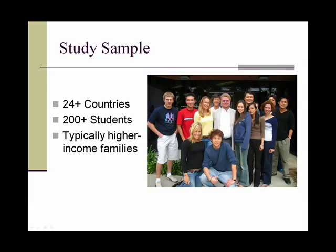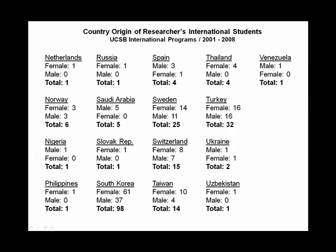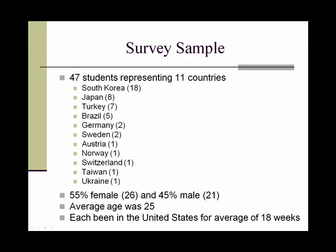Since 2001, hundreds of international students have taken my courses taught at an international language and culture program provided through a California university. These students have come from dozens of countries, and the majority of students have come from culturally distinct countries including Japan, South Korea, Turkey, Brazil, Germany, and Italy. For the study's research, a total of 47 students participated in a formal, reliability-tested survey representing 11 countries.